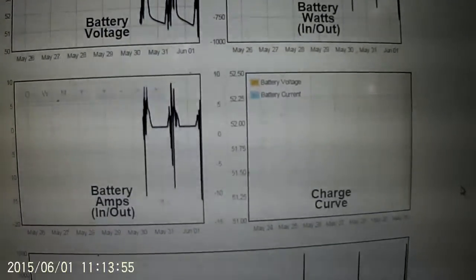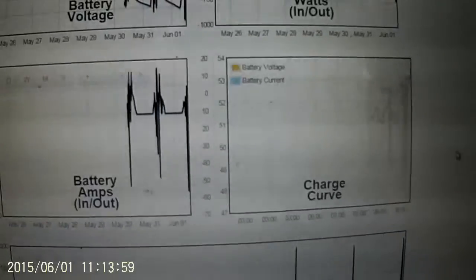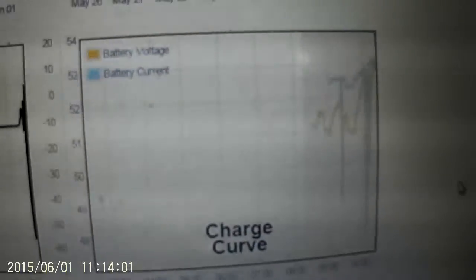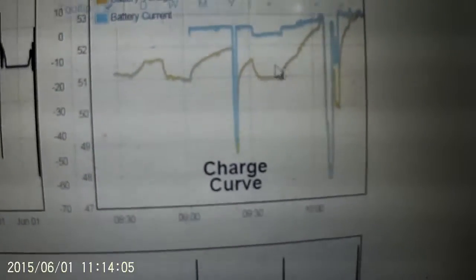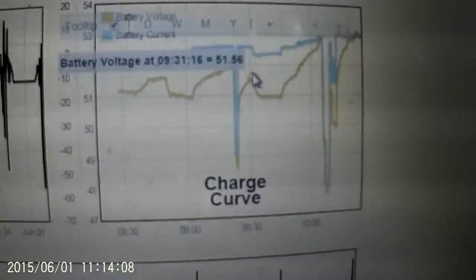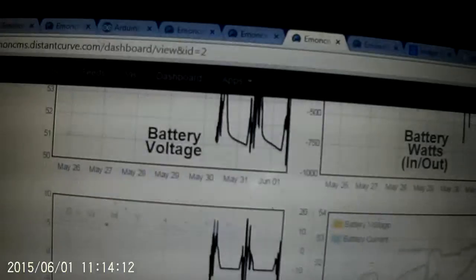We'll have a look at the charge curve here. The great thing about Emoncms is as you can see you can select certain areas. So the blue there is the current going into the batteries and the yellow is the battery voltage.